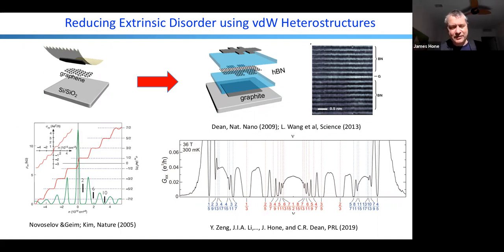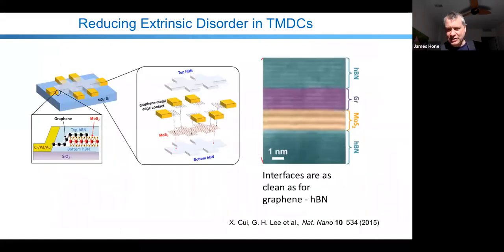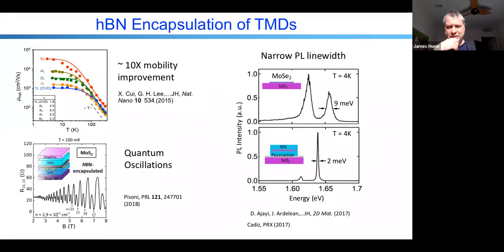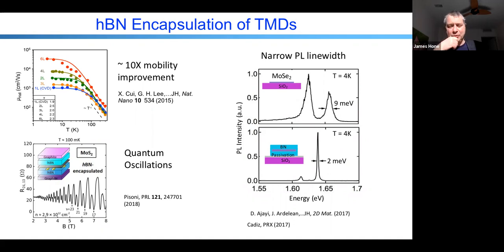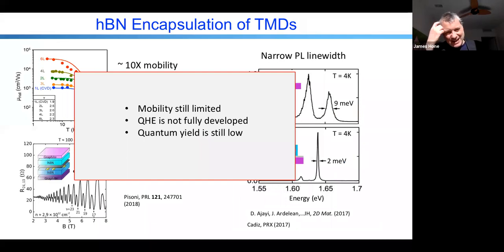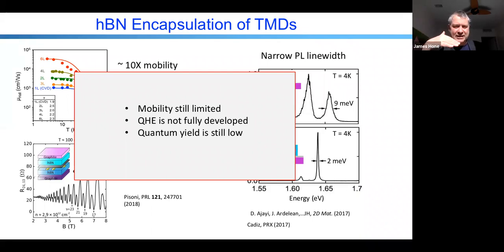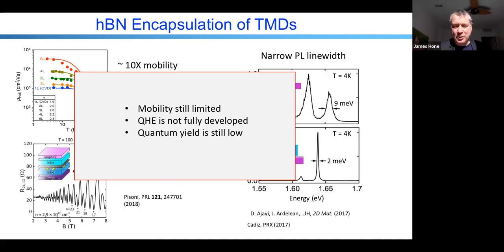The question is: does all of this happen when we just put transition metal dichalcogenides between hexagonal boron nitride? We started doing that about six years ago. We can make beautiful stacks that in many cases seem as clean as graphene stacks, and we see improvements in mobility, quantum oscillations, and a narrowing of the photoluminescence linewidth. But it's not nearly the miracle we saw with graphene. The mobility is still limited to the range of about 1,000–10,000. The quantum Hall effect has not been fully developed. And if we look at the photoluminescence, we have narrow linewidth but still quite low quantum yield. Something is still not perfect in this system.